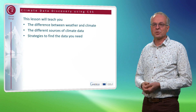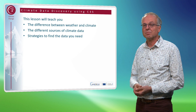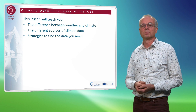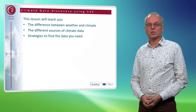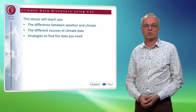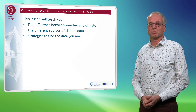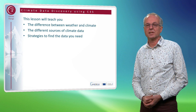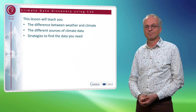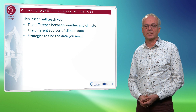In this lesson I will teach you three things. First, I will talk about the difference between weather and climate, and how this difference may be relevant for the management decisions that you have to make in your job. Next, we will address the different sources of climate data that exist — whether observed using weather stations, satellites or other means, or generated with climate models. There are pros and cons for each of these data types relevant for your usage. Finally, I will address strategies and selection criteria to find the data that you need.